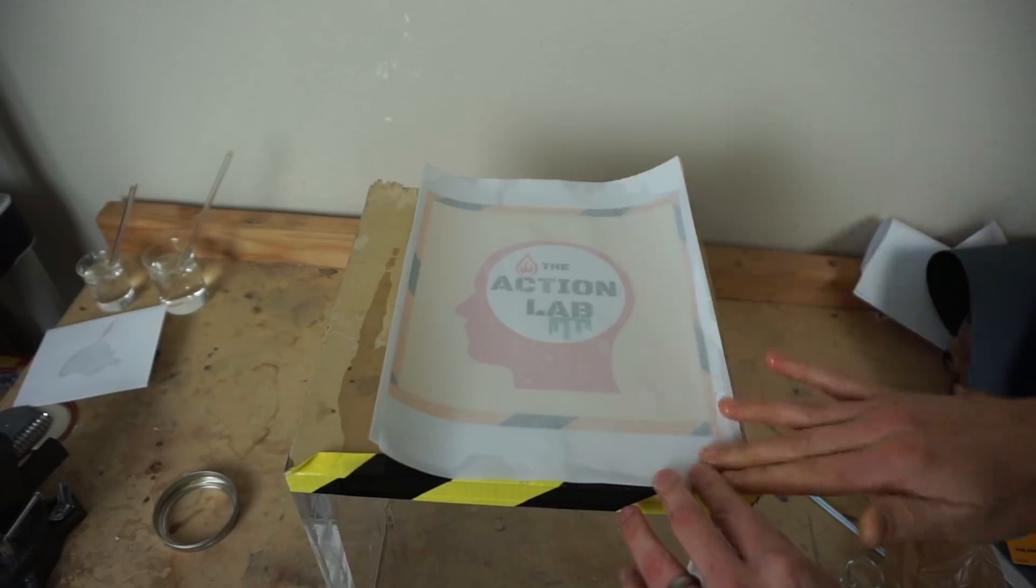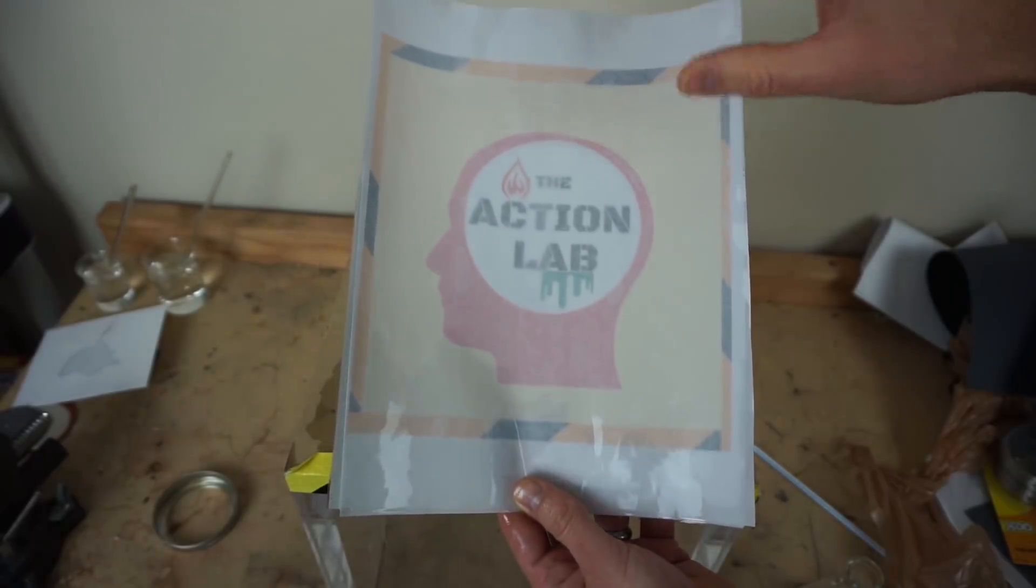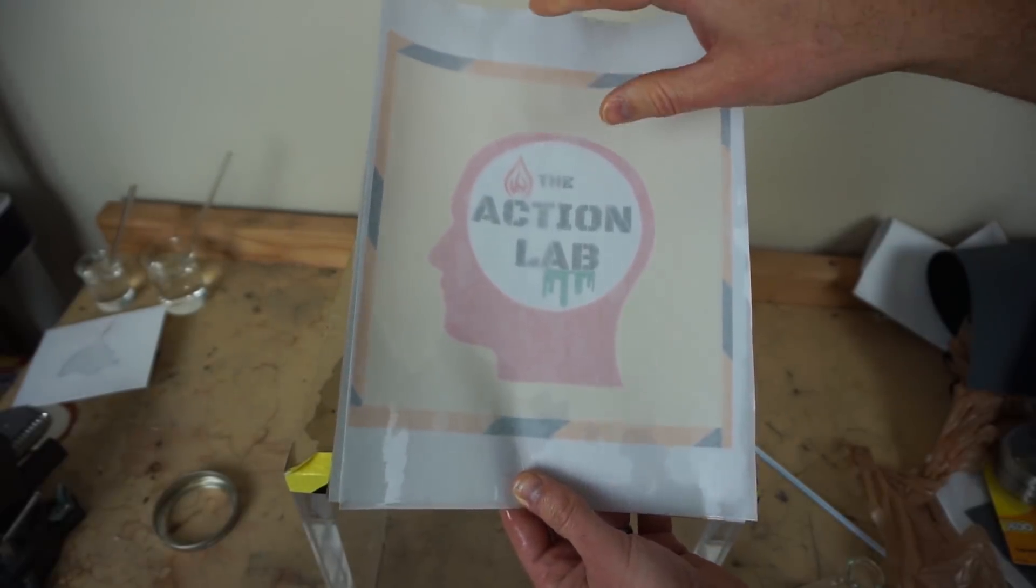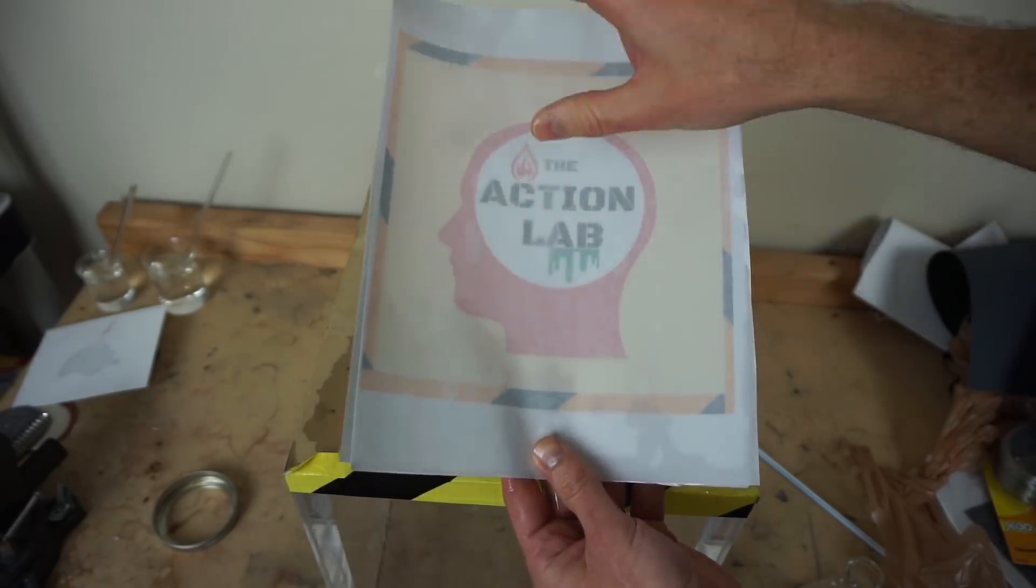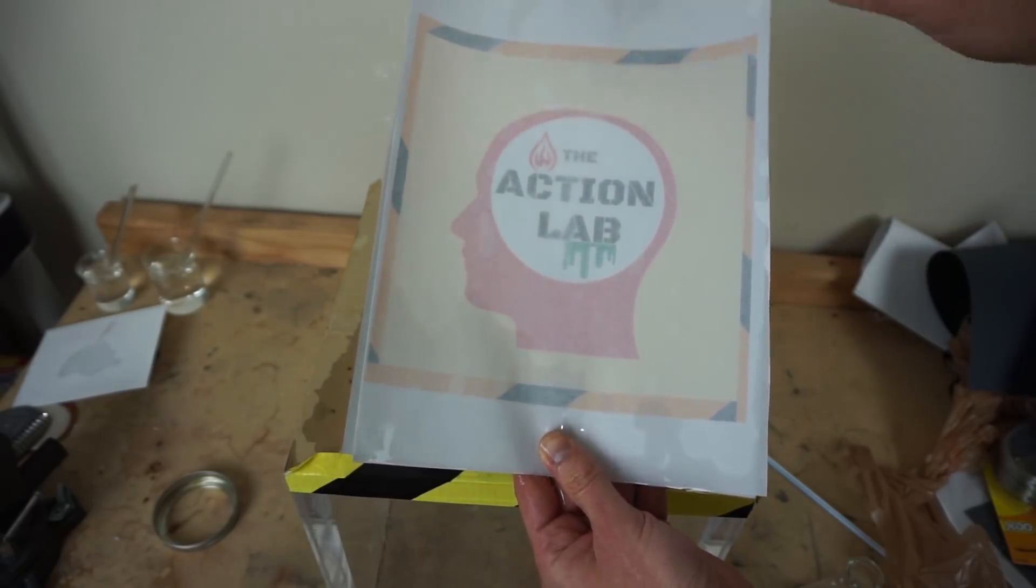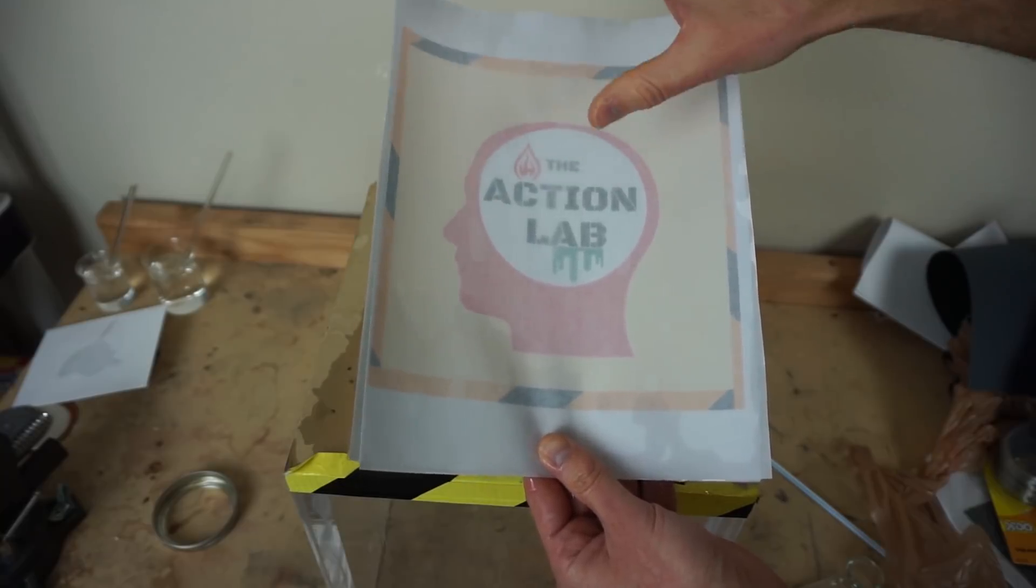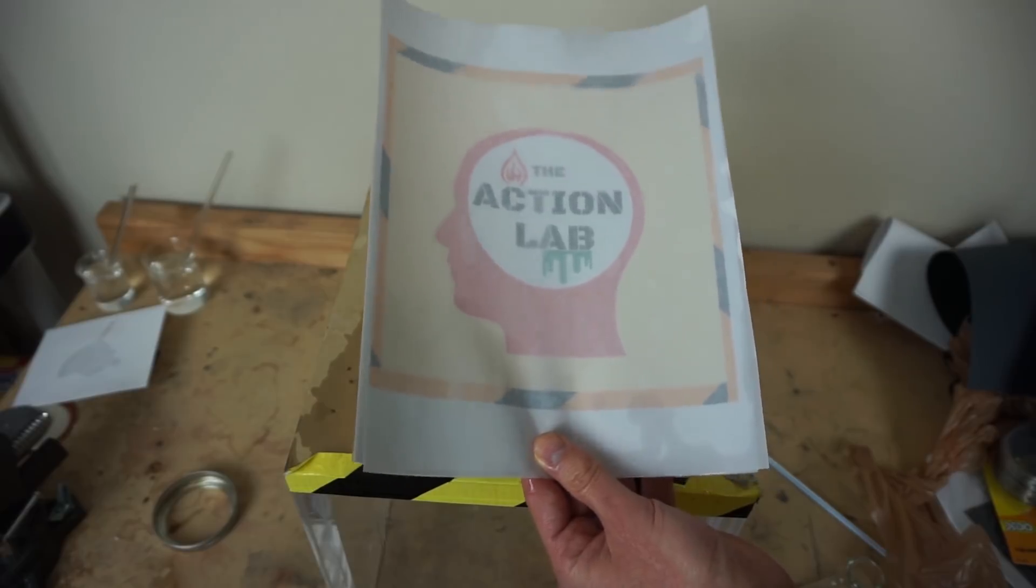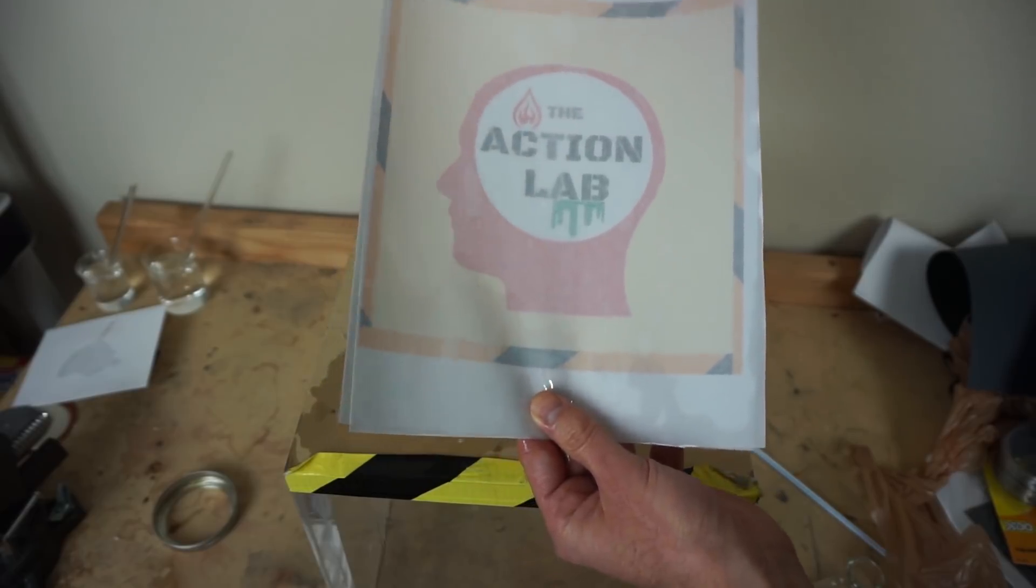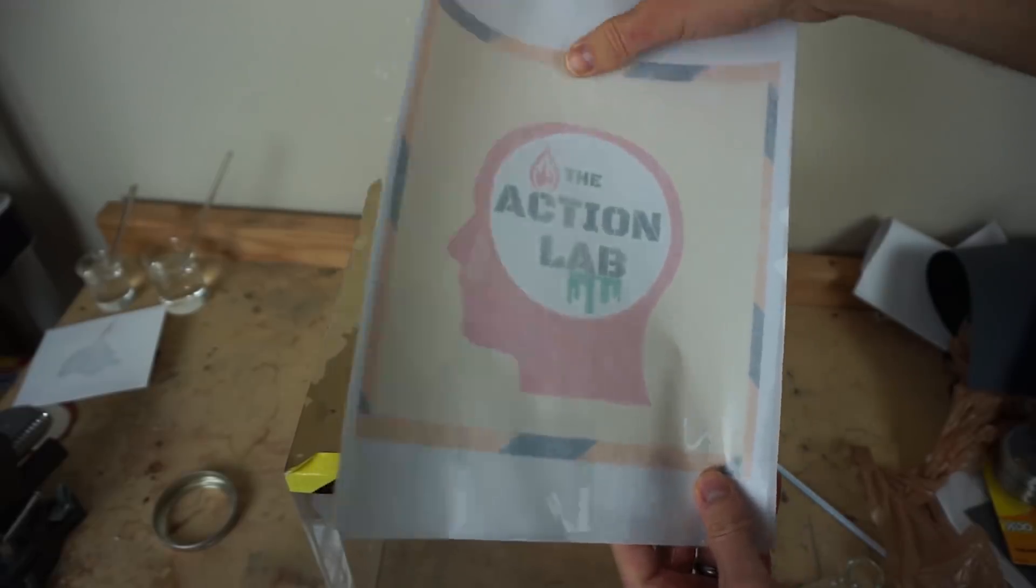You can easily see what's below it. So the reason now that we can see through this paper, almost as if it's not there, is because we've now filled in all of those little tiny air holes with isopropyl alcohol. And so the light doesn't have to bounce around as much and doesn't get scattered as much, so it can go right through it, hit the paper, and come back to our eyes, and we can still see the drawing that's below there.